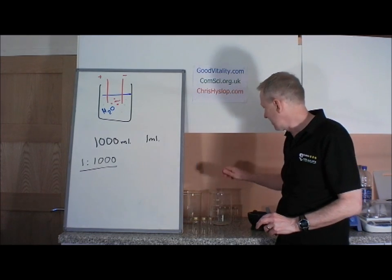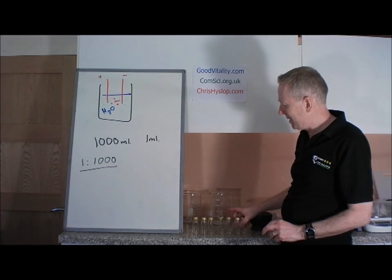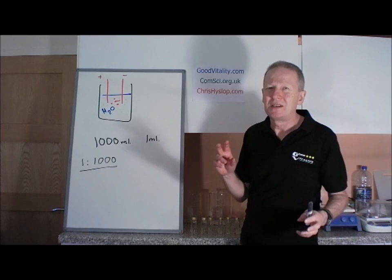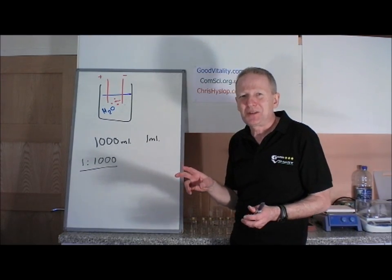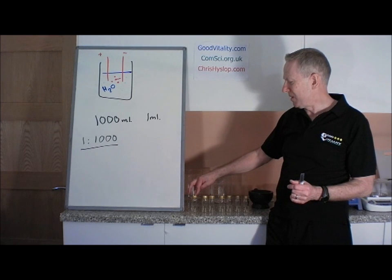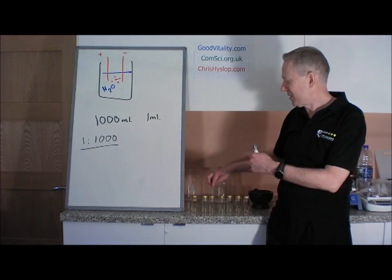So what we do is we take a series of culture tubes that look like this. Now unfortunately I can't do this on camera because it has to be done in sterile conditions. Each one of these culture tubes contains a nutrient media, and what we do is we take a bottle of colloidal silver, and we've used several high street versions to compare it to, and we dilute it. So we might put one mil in there, which would be a one in ten. We take one out of that to another one in ten, which makes it one in a hundred, and so on and so forth.